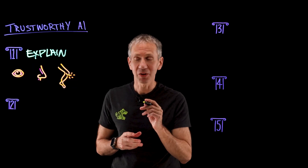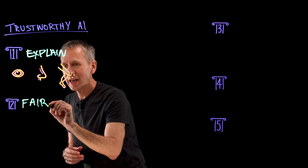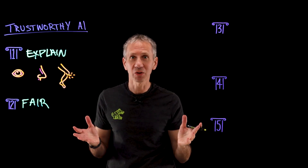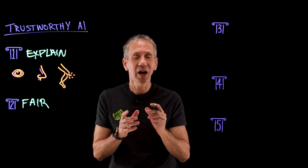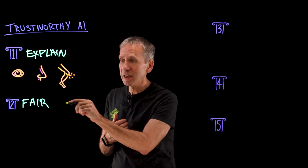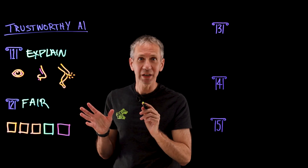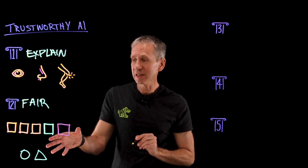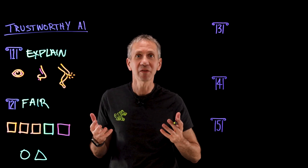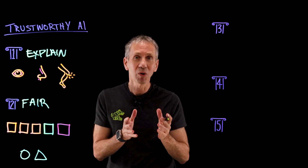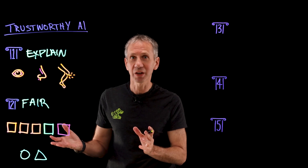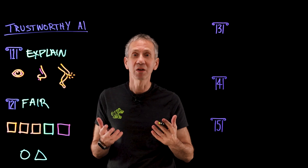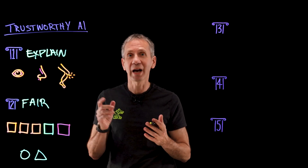The second pillar is fairness — the AI should not be biased toward or against any particular population or group. For example, if we have an object recognition system based on AI that's been trained on a whole bunch of different squares, it recognizes those well. However, when you give it other shapes, it really can't recognize those very well because it hasn't seen enough of them — there's not enough of that in its training database. We need to make sure it sees a diverse set of objects to make the right recognition. Another example is facial recognition, where we need to use diverse faces to make sure our AI is fair.